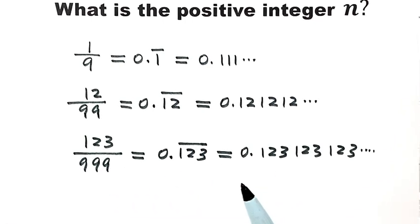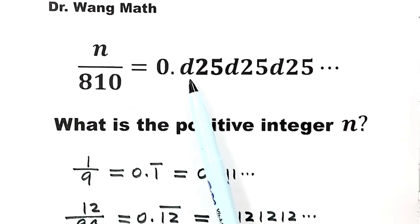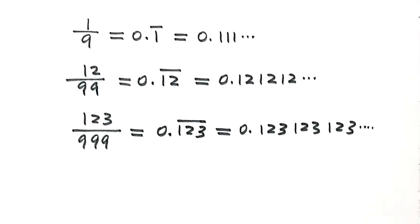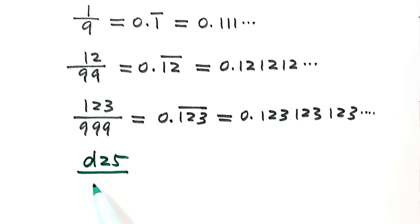Now let's go back to our question. Because here we have 3 digits d25 repeating, then use this result. Then the 3 digit positive integer d25 over 999.